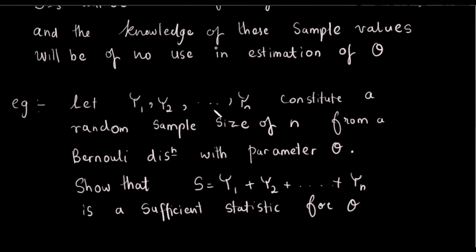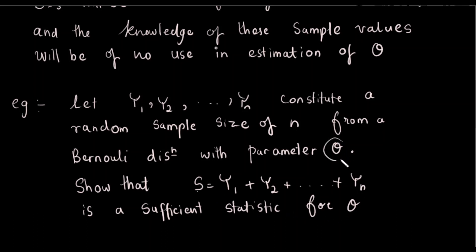Let y1, y2, y3, ..., yn constitute the random sample of size n from a Bernoulli distribution with parameter theta. If you have a statistic — a sufficient statistic — you can identify the parameters of theta.